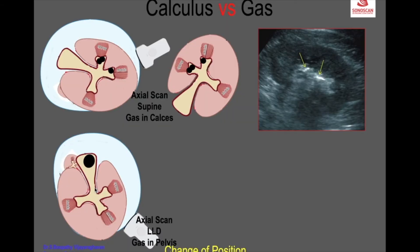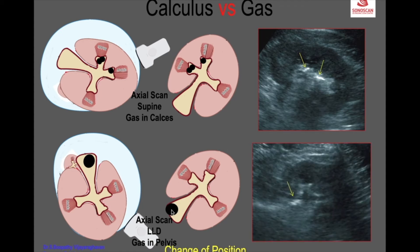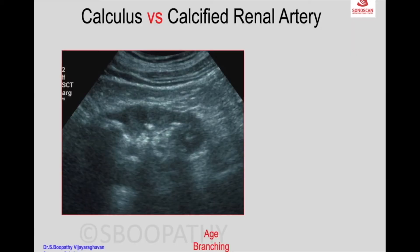If you change the position, the gas moves to the non-dependent part — that is, the renal pelvis. Because we do the scan from here, the image will appear up here and the gas will be in the renal pelvis. It has moved from the calices to the pelvis, confirming that it is gas and not a calculus.